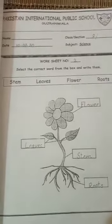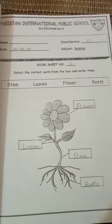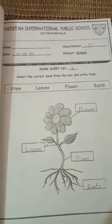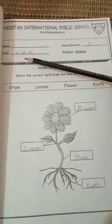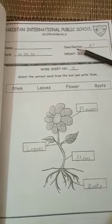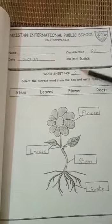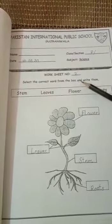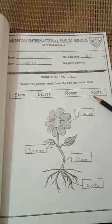Assalamualaikum students. Now we will do our second worksheet of unit number three, Plants. First of all, we will write down the date: 10-07-20, and we will write class and section here. This is worksheet number two.